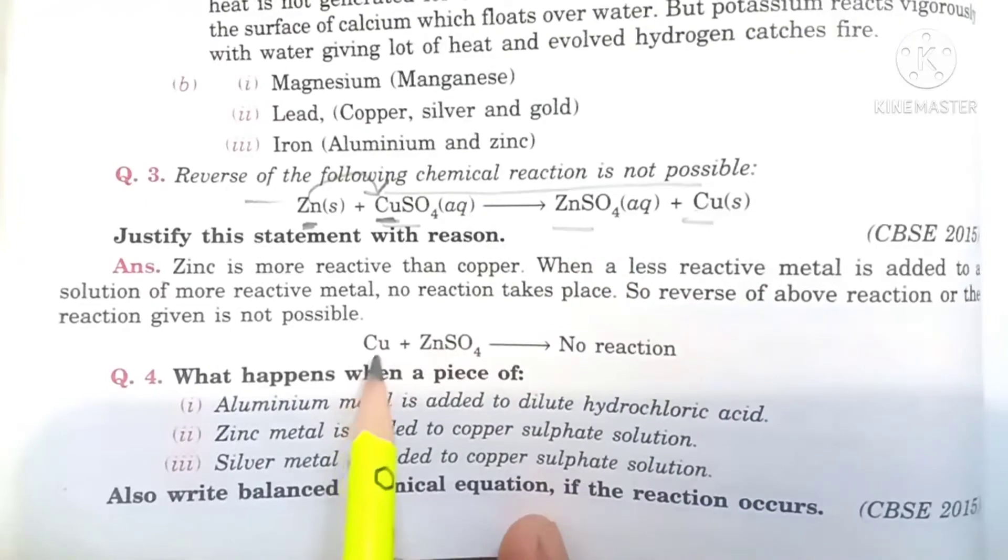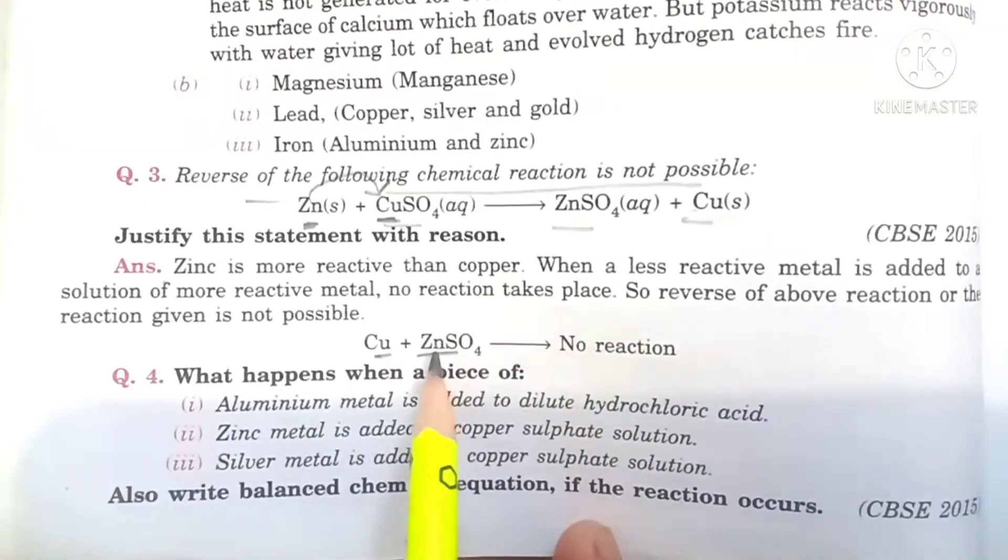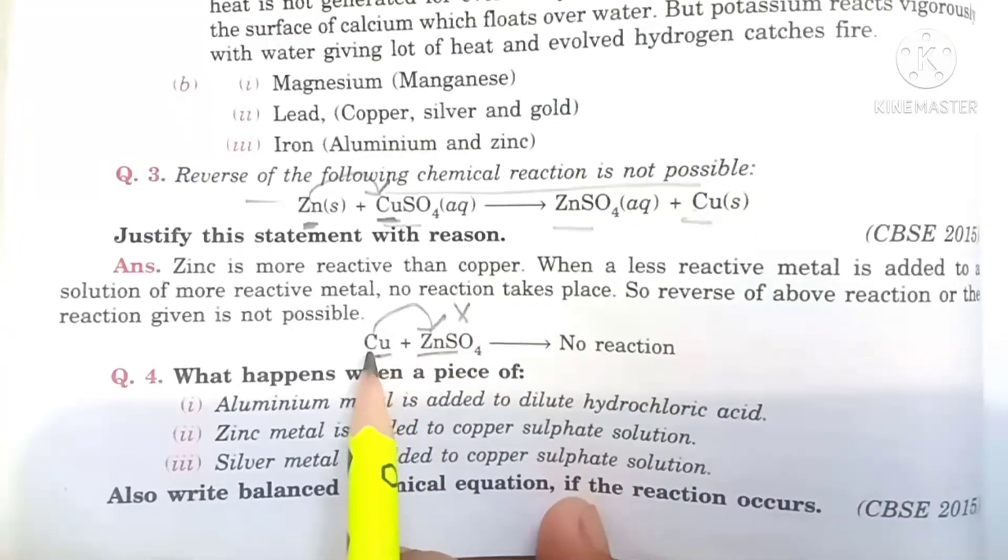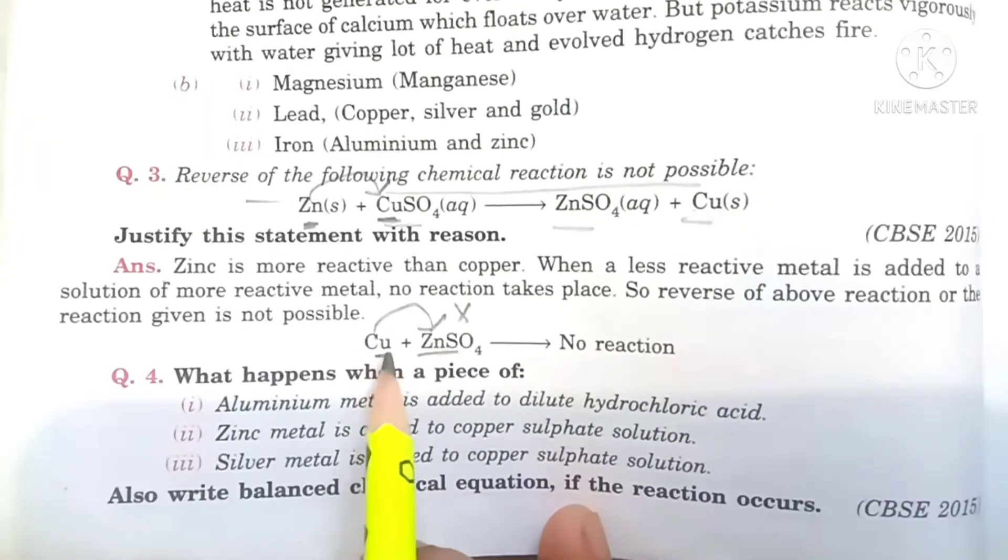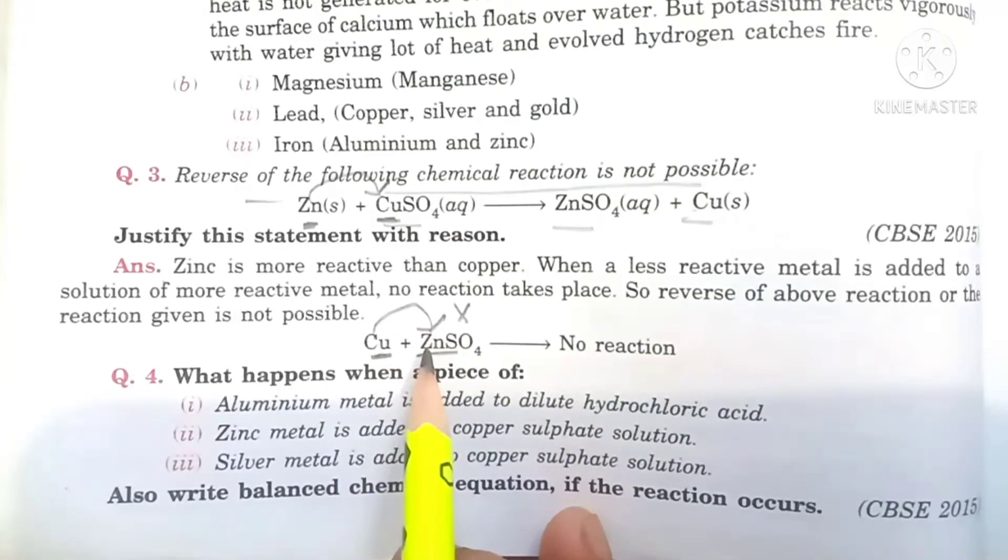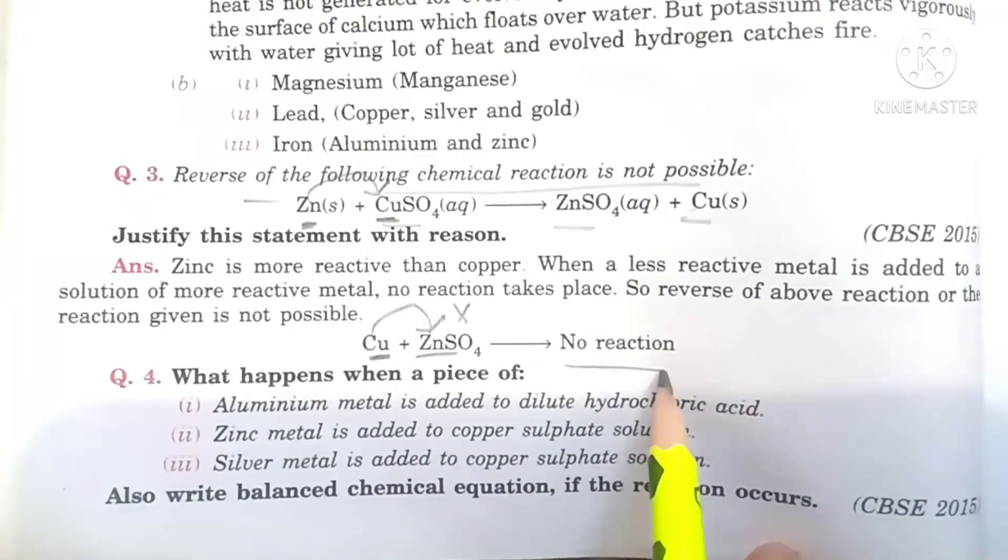But if we reverse this reaction, if we react copper with zinc sulfate, copper will not displace zinc because copper is less reactive than zinc. Copper is less reactive, therefore copper will not displace zinc, so no reaction will take place.